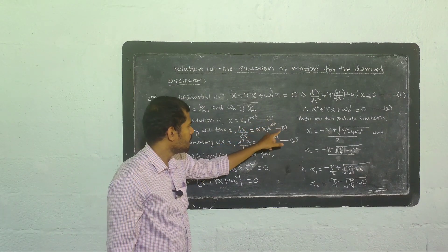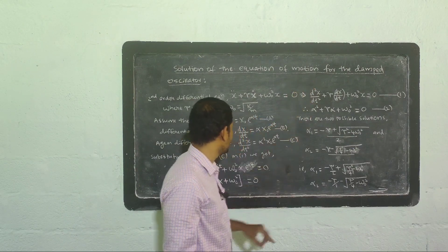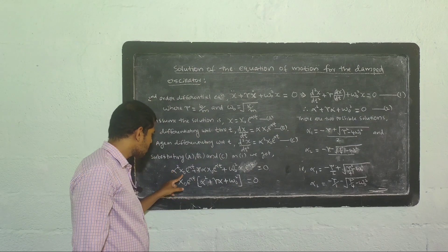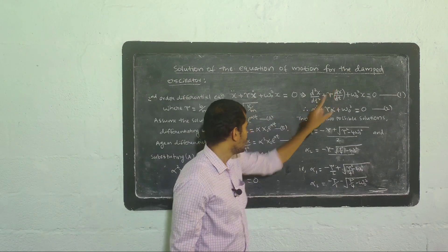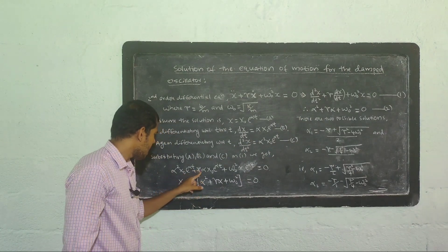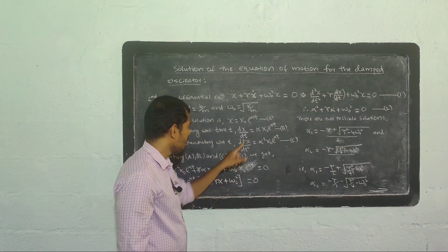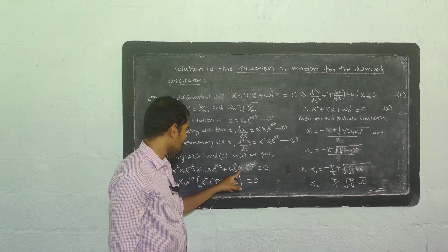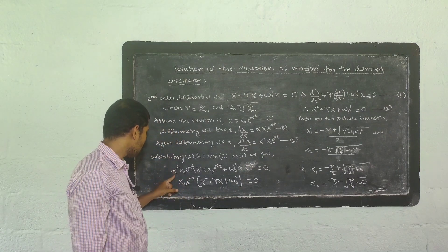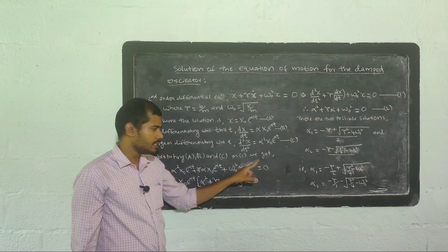We substitute equations a, b, and c into equation 1. In place of d²x/dt² we substitute alpha squared x₀ e raised to alpha t. The gamma dx/dt term becomes gamma times alpha x₀ e raised to alpha t from equation b. The omega zero squared x term becomes omega zero squared x₀ e raised to alpha t from equation a. Our equation becomes: alpha squared x₀ e raised to alpha t plus gamma alpha x₀ e raised to alpha t plus omega zero squared x₀ e raised to alpha t equals zero.